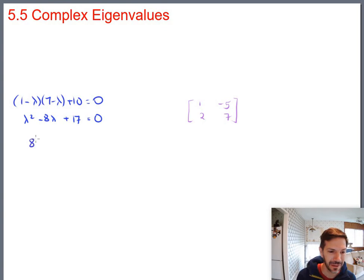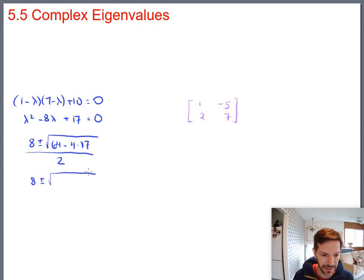So let's go ahead and do quadratic formula on this thing to try to solve it. So that would be negative b plus or minus the square root of b squared minus 4 times a times c all over 2a. A little simplification. 8 plus or minus 64 minus 4 times 17. 4 times 17, which is 68. So 64 minus 68, all over 2.